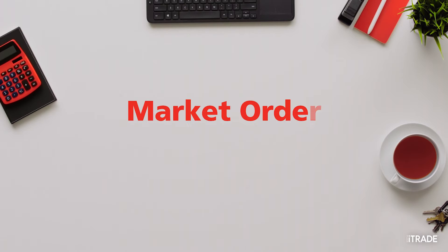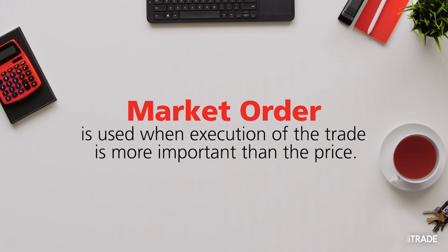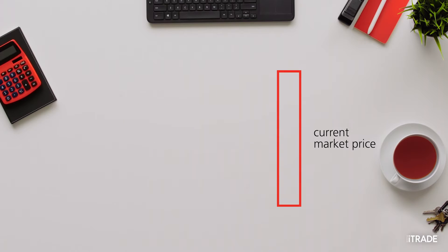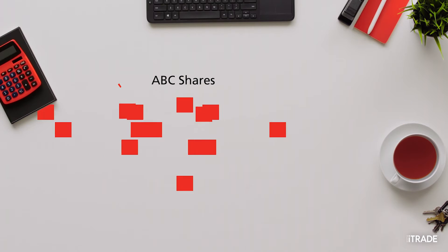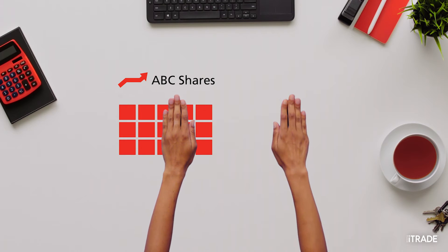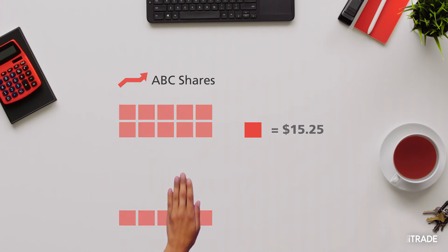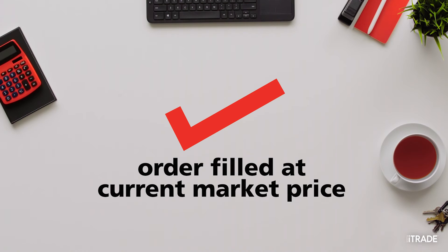A market order is used when execution of the trade is more important than the price, and the buyer or seller is willing to accept the best available offer or bid. You're looking to buy a stock in ABC with a market price of $15.25 per share. You place a market order to buy 50 shares, and your order is filled at the current market price of $15.25 per share.